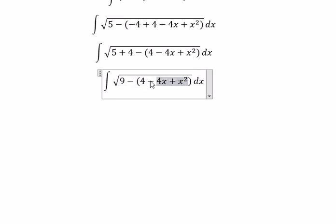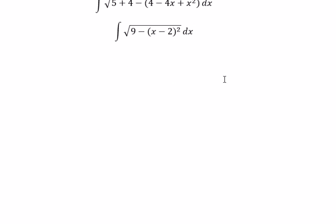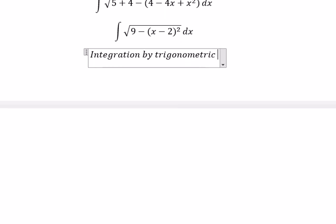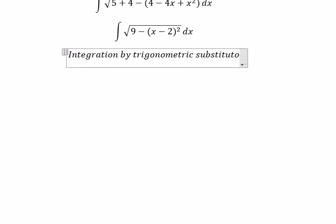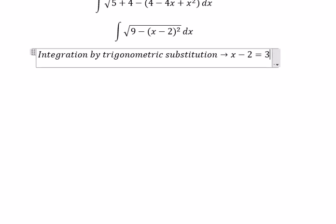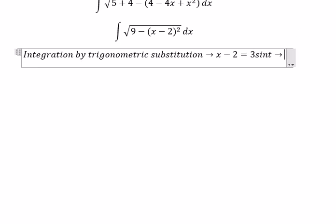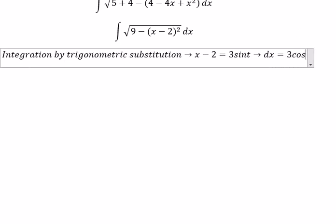This one we can change into x minus 2 to the power of 2. Now we can use integration by trigonometric substitution. So we put x minus 2 equal to 3 sine t, dx equal to 3 cosine t dt.